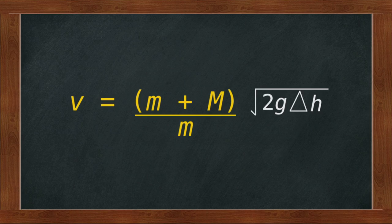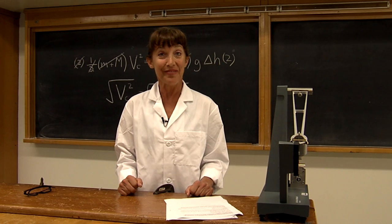So now, as you can see, all we need to calculate the velocity of the projectile is the height increase delta h, giving us the final equation v = (m + M) / m × √(2gΔh). Have fun.